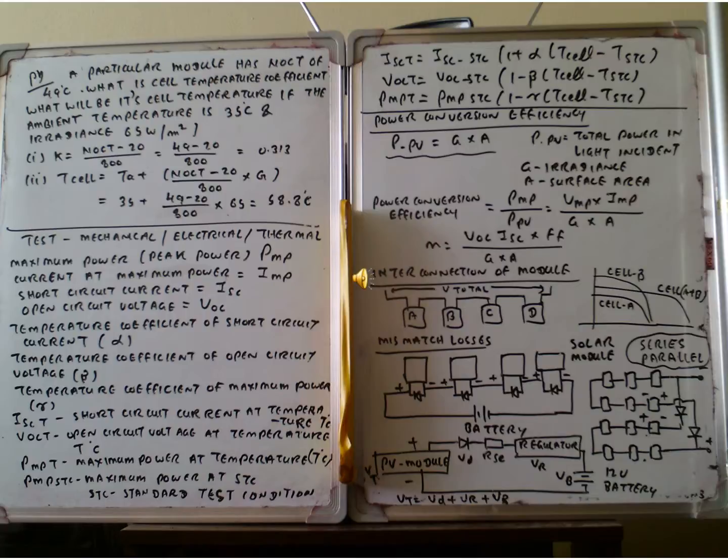So we write down the equation. ISTC is equal to ISC STC multiplying with (1 plus alpha times (T minus TSTC)). And VOCT is equal to VOC STC (1 plus beta times (T minus TSTC)). PMP STC is equal to PMP STC (1 minus gamma times (T minus TSTC)). So this is when we get the ISCT, VOCT, and PMPT.